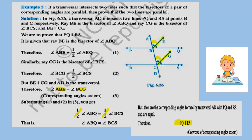Since BE bisects angle ABQ, angle ABE equals half of angle ABQ. Similarly, angle BCG equals half of angle BCS. Since BE is parallel to CG, angles ABE and BCG are corresponding angles and therefore equal — so their values from equations 1 and 2 have equal left-hand sides.